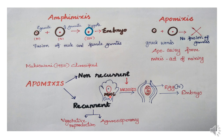Remember that the megaspore mother cell is diploid — it has a double set of chromosomes. In meiotic division, the megaspore produced is haploid — it has a single set of chromosomes. So when the haploid megaspore develops into an embryo sac, the embryo sac is haploid.